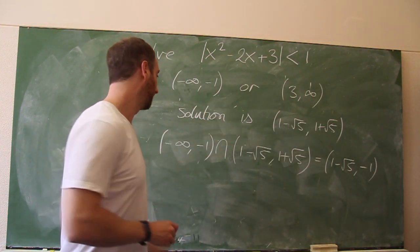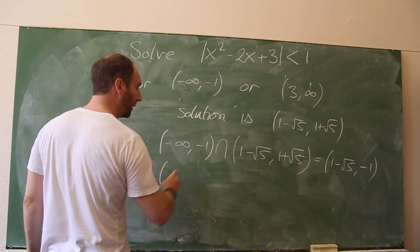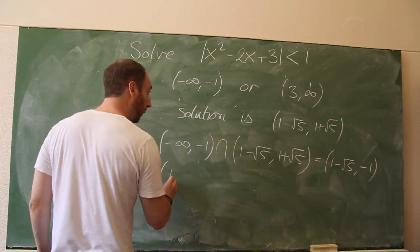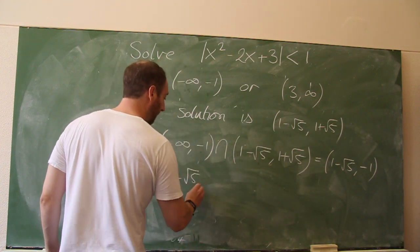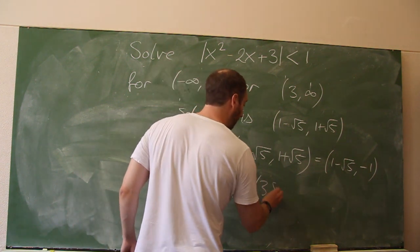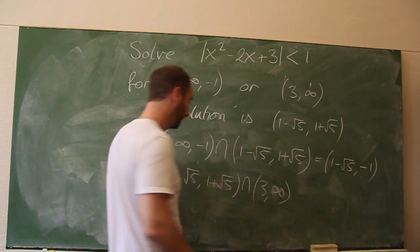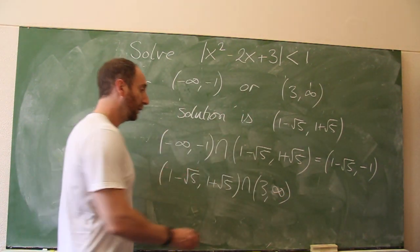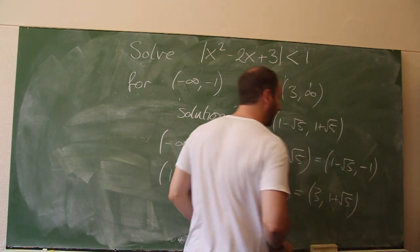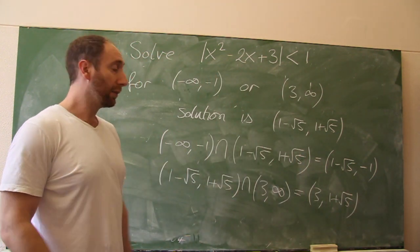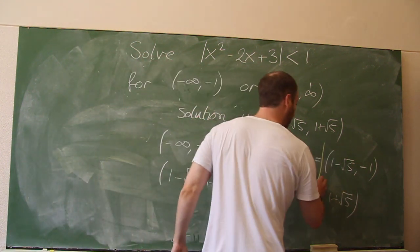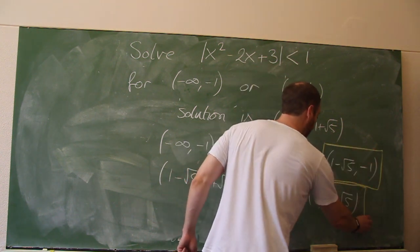How about the other region? The intersection of (1 − √5, 1 + √5) with (3, ∞): since 1 − √5 is to the left, this gives us (3, 1 + √5). So these are the two solutions we've found for the first part of the piecewise function.